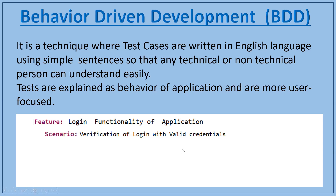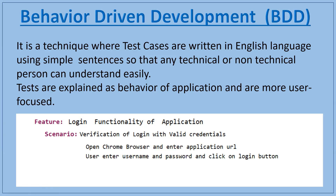After writing the scenario, we write the actual steps. The first step is: open Chrome browser and enter the application URL. The second step is: the user will enter the username and password and click on the login button. The third step is: verify whether the user logged in successfully or not. So there are three steps performed under this scenario.